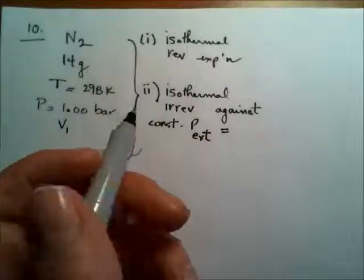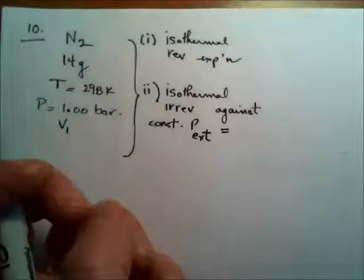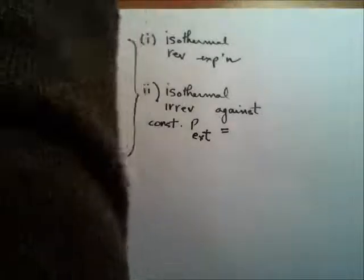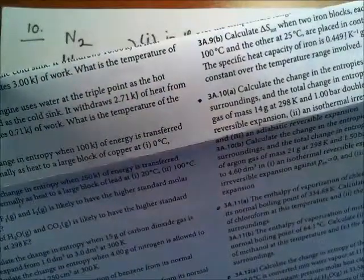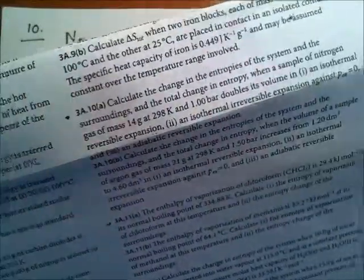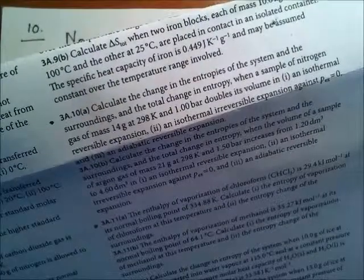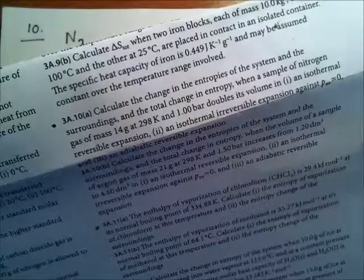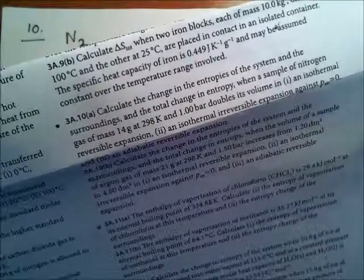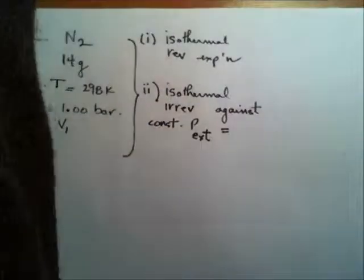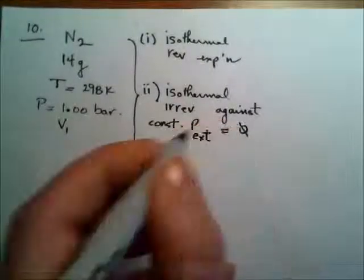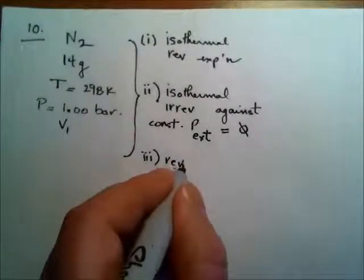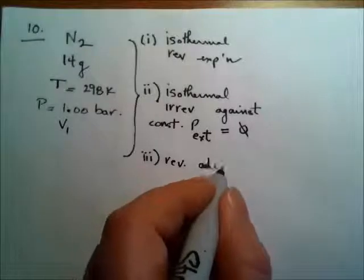Oh, hold on. Constant external pressure, I have here that it's zero. Let's have a look at the question again. This seems kind of strange. 10A isothermal irreversible expansion against P external equals zero. Okay.